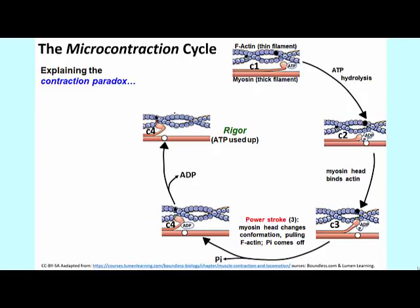Now you're looking at the equivalent of rigor. The ADP has been hydrolyzed. The ATP in a person who has passed away eventually gets used up, and what you're left with is myosin heads bound to actin permanently. That's rigor mortis.